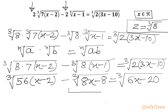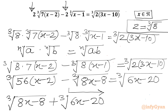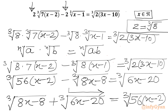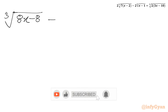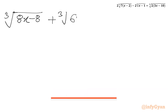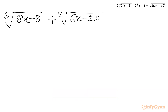Now I will take the negative term to the RHS. So I can write cube root of (8x minus 8) plus cube root of (6x minus 20) equals cube root of 56 times (x minus 2). We can write 56 as 4 times 14, and then we have (x minus 2).